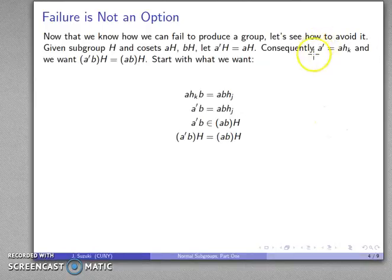Now I know that a' = ahk, so I can drop that in: ahkb = abhj. Because this is a group, I can multiply by the inverse of a, that drops out: hkb = bhj. This seems to be a good place to start. If I have this, then I get this.